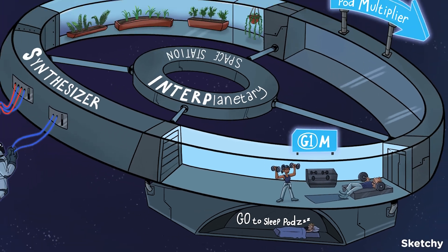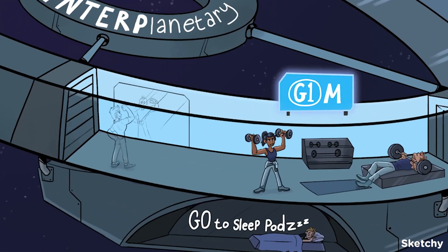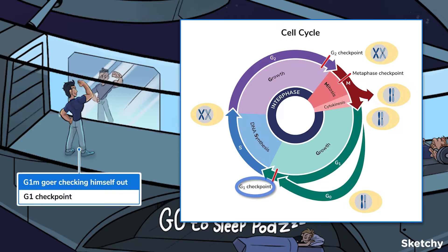Let's change gears and talk about cell cycle regulation. There are three important checkpoints in a cell's life: G1, G2, and the metaphase checkpoint. The G1 checkpoint is present at the end of G1. The goal is making sure the cell has grown enough in size and has all the necessary components for DNA synthesis. This process is regulated by specific growth factors such as insulin, platelet-derived growth factor, epidermal growth factor, and erythropoietin — they specifically bind to tyrosine kinase receptors, allowing the cell to enter the S phase.